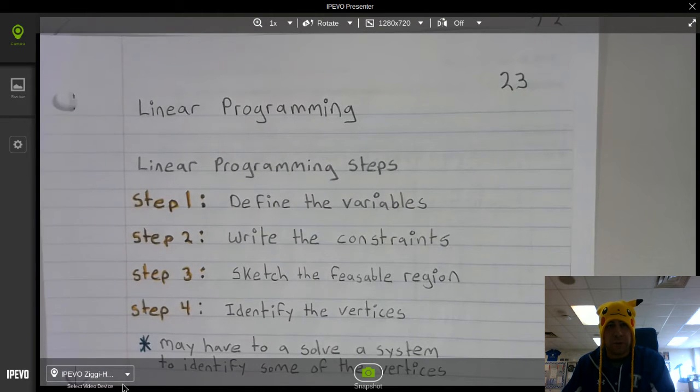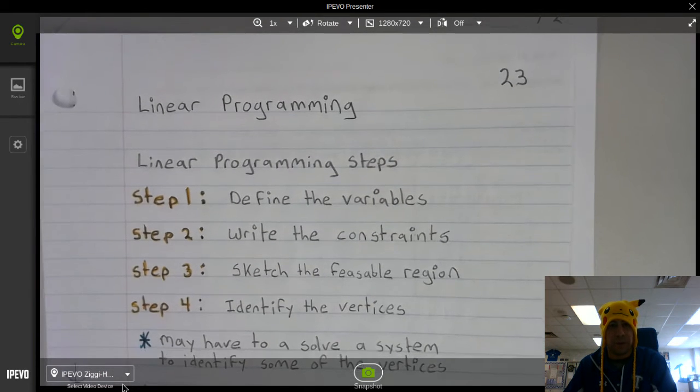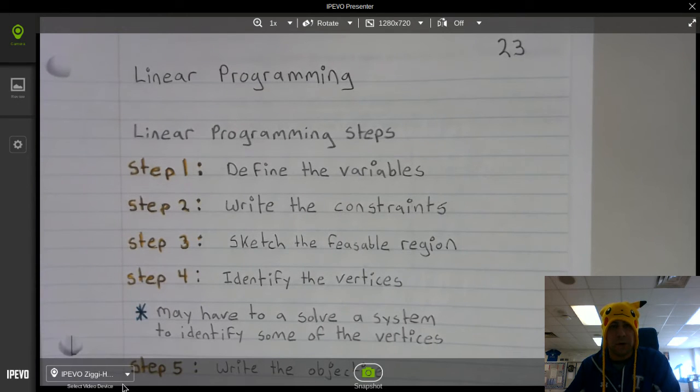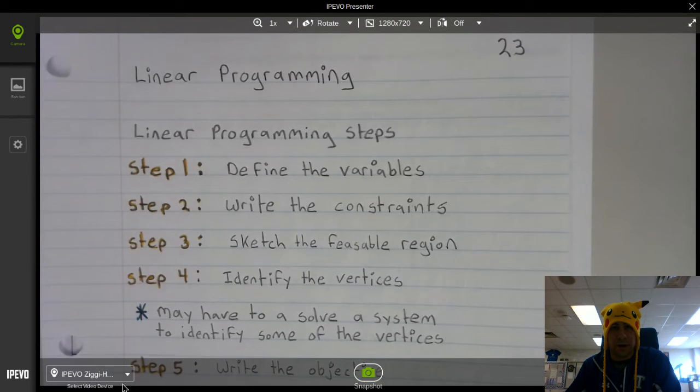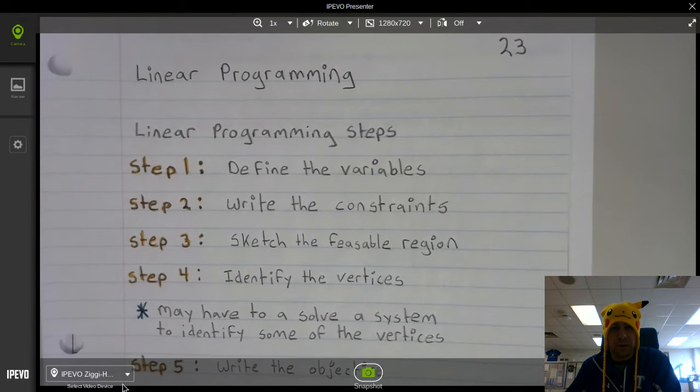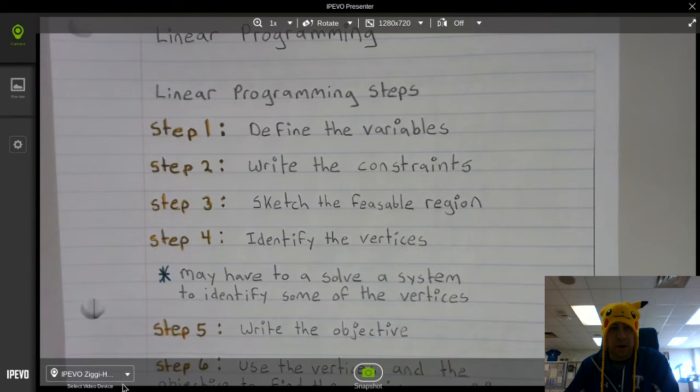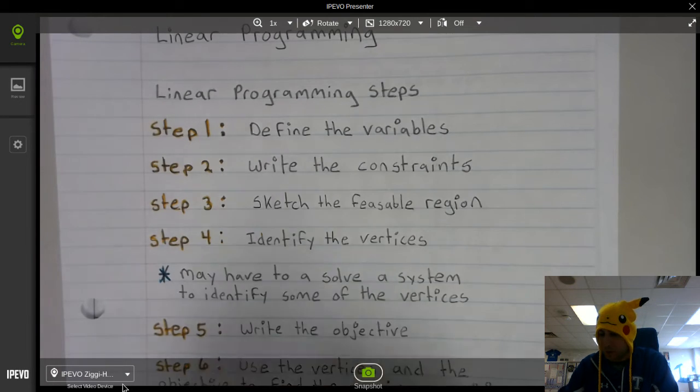All right, so let's look at the steps to linear programming. Step one is to define the variable. Step two is to write the constraints. Step three is to sketch the feasible region. Step four is to identify the vertices. And then on step four, there's a little asterisk. You may have to solve a system to identify some of the vertices.